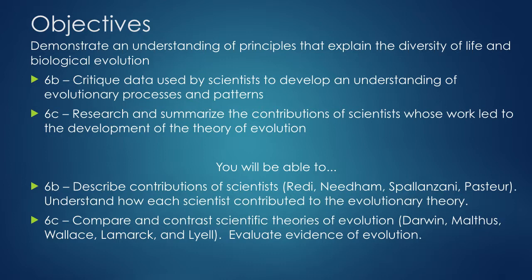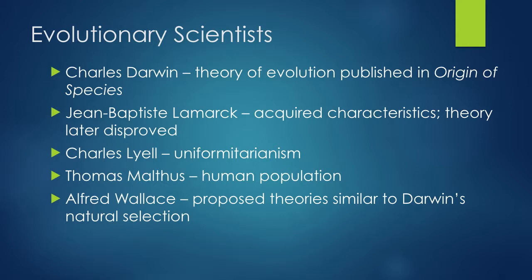The evolutionary scientists we're going to talk about in this unit are Charles Darwin, who devised the theory of evolution and published it in Origin of the Species; Jean-Baptiste Lamarck, whose theory was that acquired characteristics can be passed to offspring — his theories were later disproved, but they helped form some building blocks for Darwin; Charles Lyell, who came up with the principle of uniformitarianism; Malthus, who had theories on human population growth; and finally Alfred Wallace, who came up with a theory of evolution very similar to Darwin's, which we'll discuss.